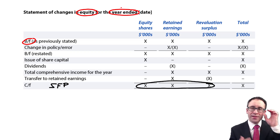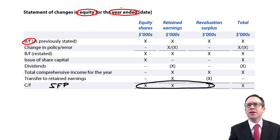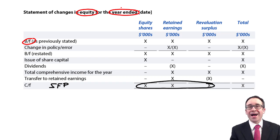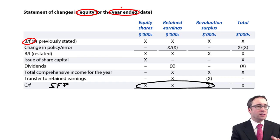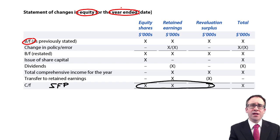Where the statement of changes in equity tends to appear in any detail is as a part B or C to a longer-form question in section C. Maybe you've been asked to prepare a statement of financial position or a statement of profit or loss, and then for maybe three to four marks you're asked to prepare a statement of changes in equity — using the equity figures, the profit for the year, revaluation surplus, or total comprehensive income figure already prepared.